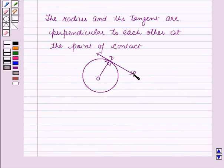That means, in this circle with center O, if PD is the tangent and D is the point of contact, then the angle at D will be 90 degrees. In other words, the angle between the radius and the tangent at the point of contact is 90 degrees.